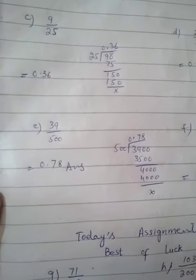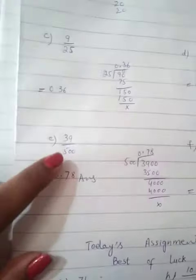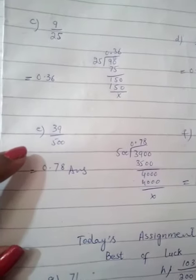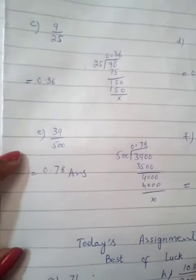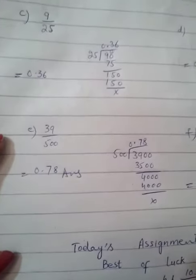Question number E, 39 over 500. 39 will be in the division box and 500 will be the divisor, so we will put 0.